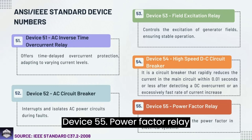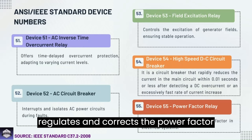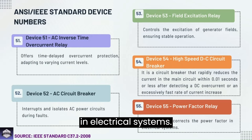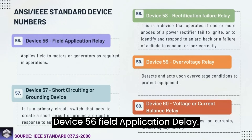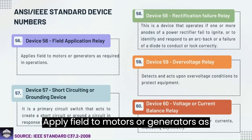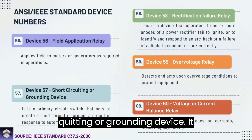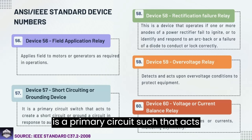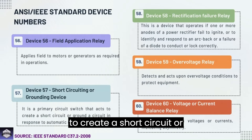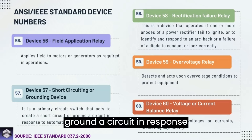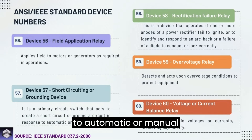Device 55: Power factor relay — regulates and corrects the power factor in electrical systems. Device 56: Field application relay — applies field to motors or generators as required in operations. Device 57: Short circuiting or grounding device — a primary circuit switch that acts to create a short circuit or ground a circuit in response to automatic or manual activation.